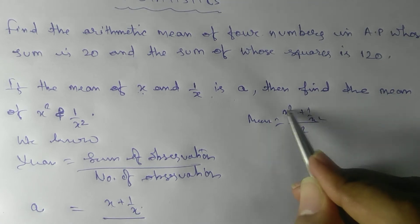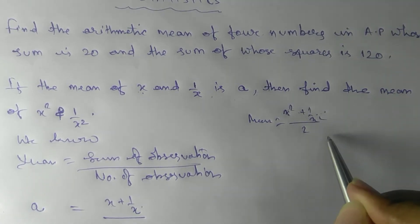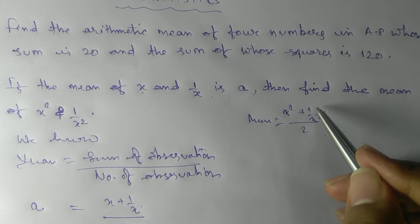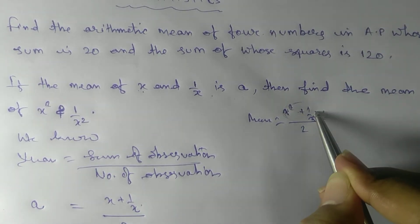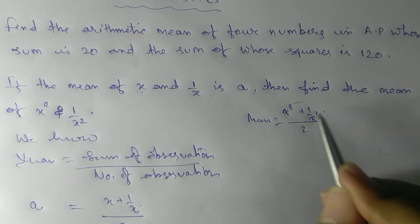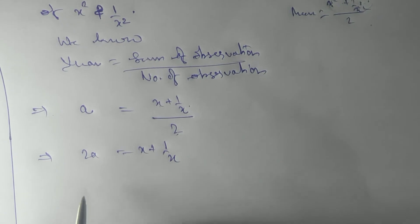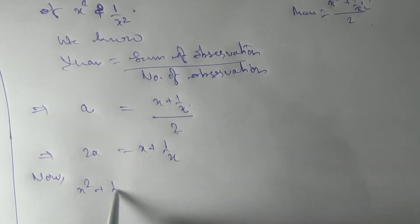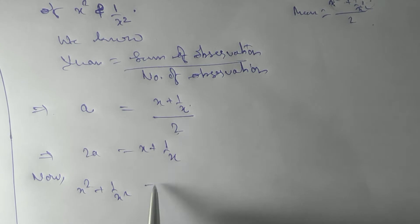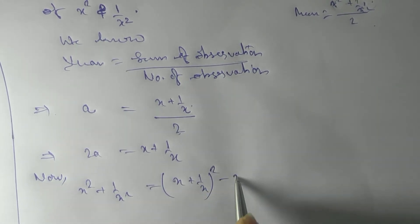So x² + 1/x² is our sum of observations — x² is one observation, 1/x² is the second — divided by 2. Our target is to find this. Now, we know the formula: x² + 1/x² can be written as (x + 1/x)² minus 2.